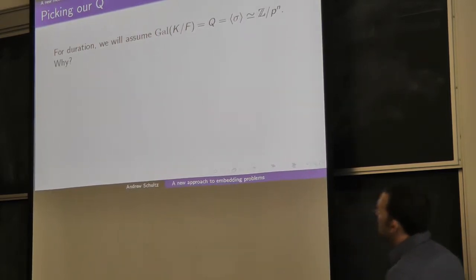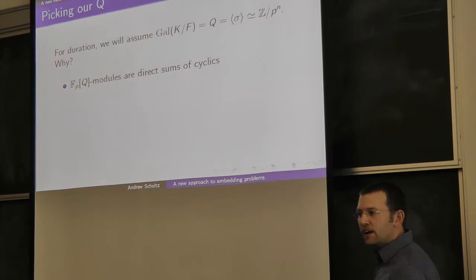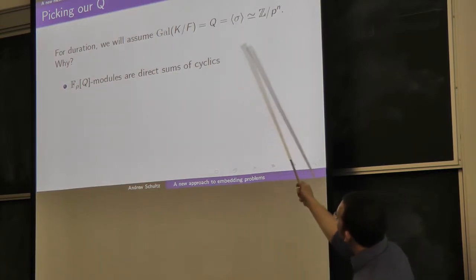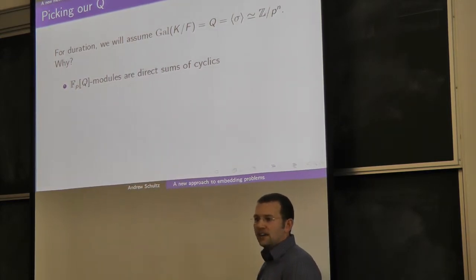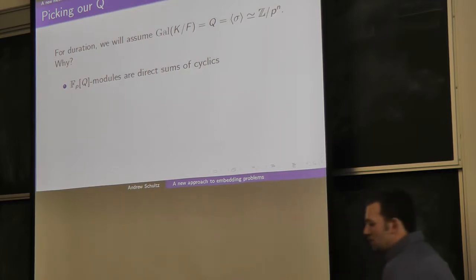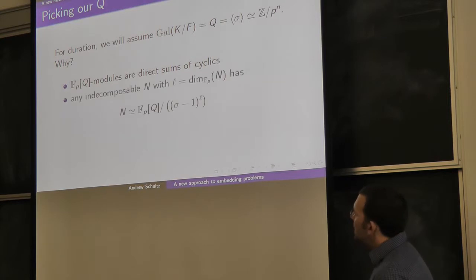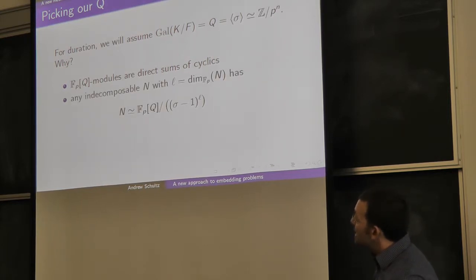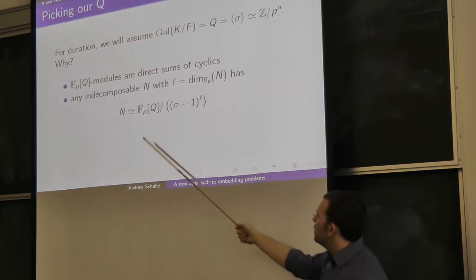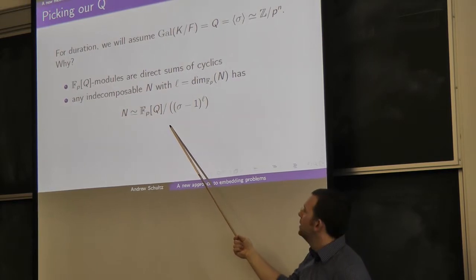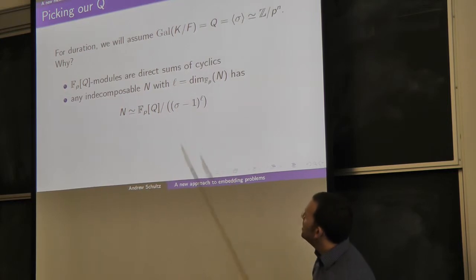One reason I'm focusing on this group: when Q is Z mod p^n, FpQ modules are fairly well behaved. Every FpQ module can be written as a direct sum of cyclic modules. And if you have an indecomposable FpQ module and you know its dimension over Fp is L, then automatically you know M is isomorphic to a specific FpQ module — you precisely know its isomorphism class based only on its dimension.